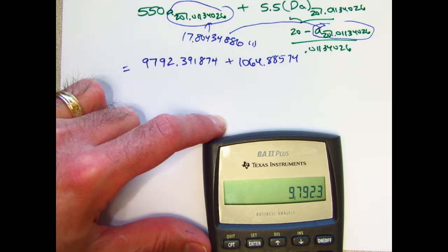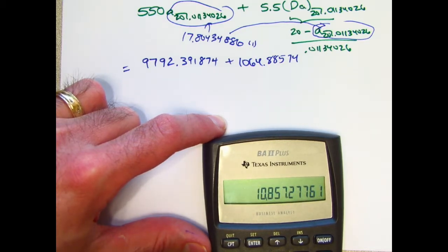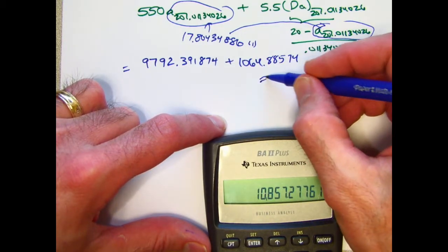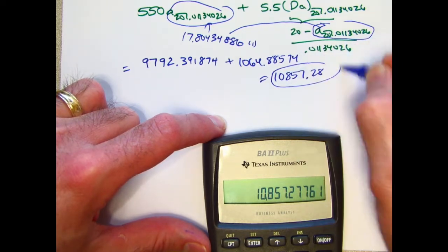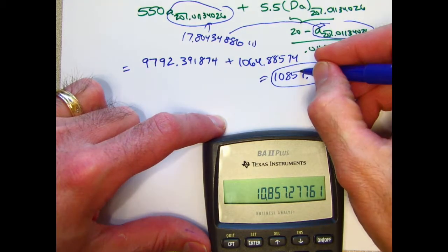Add these two things together now, and round. And I get a final answer of 10,857.28. And that is correct.